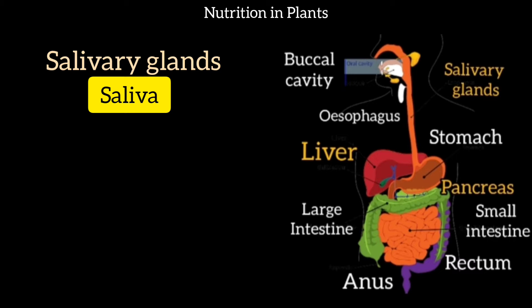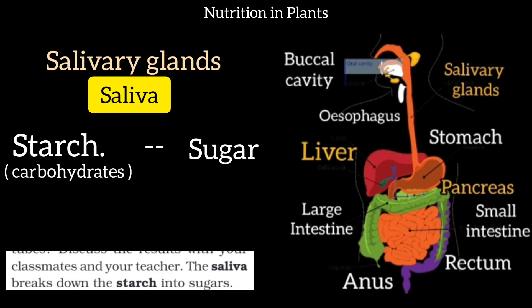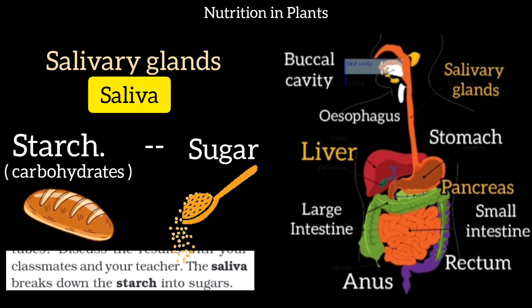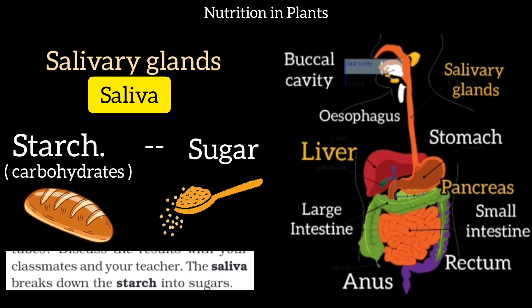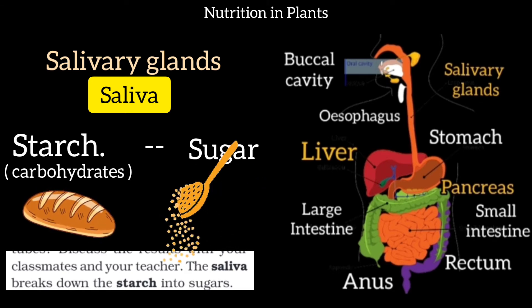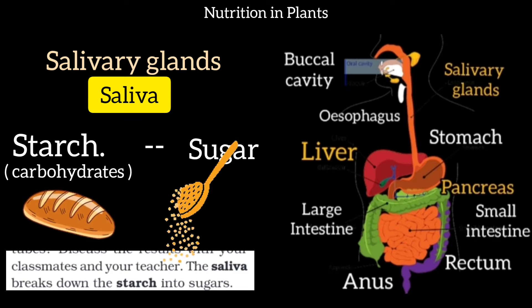This is very important: saliva breaks down starch into sugar. The starch in our food, which is a carbohydrate, is converted into sugar. This is called the first step of digestion.